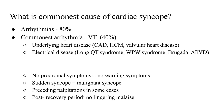What is the commonest cause of cardiac syncope? 80% of cases of cardiac syncope are due to arrhythmias, and the commonest arrhythmia is ventricular tachycardia, which contributes to 40% of cases. Ventricular tachycardia can be due to underlying structural heart disease — like coronary artery disease, hypertrophic cardiomyopathy, or valvular heart disease — or because of electrical problems like long QT syndrome, WPW syndrome, Brugada syndrome, or arrhythmogenic right ventricular dysplasia.